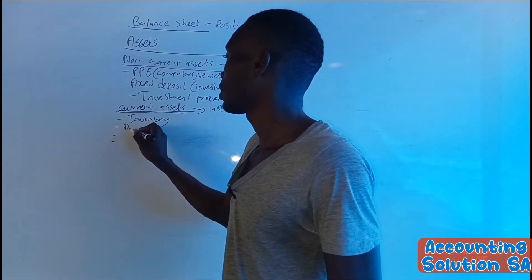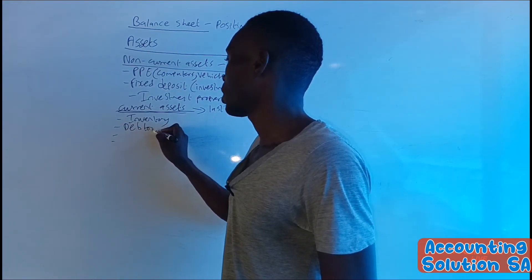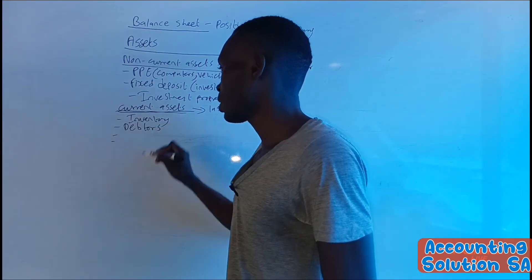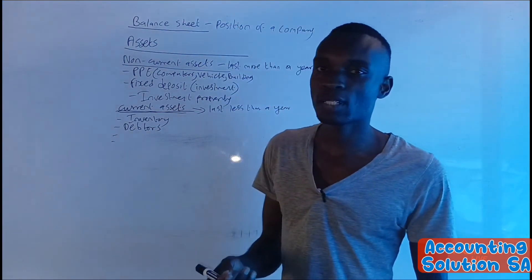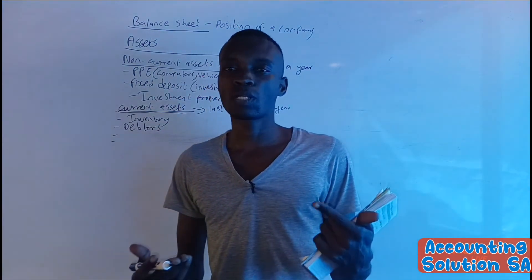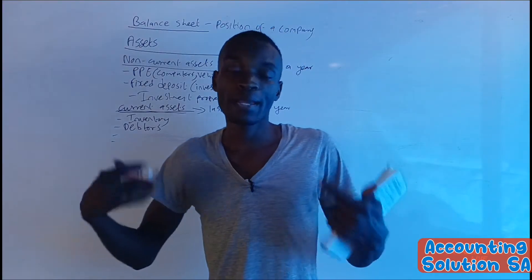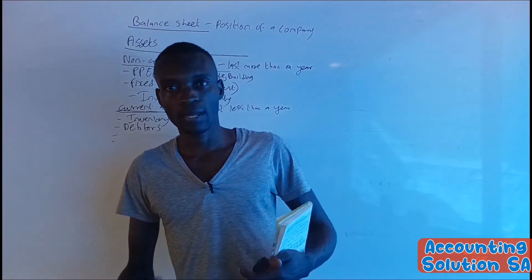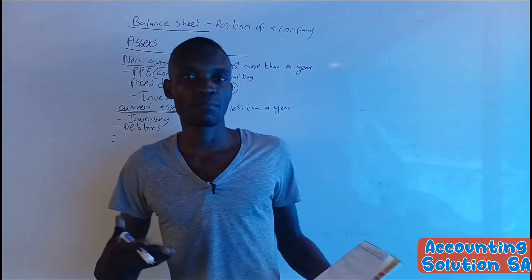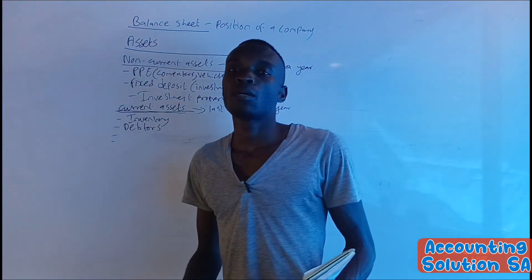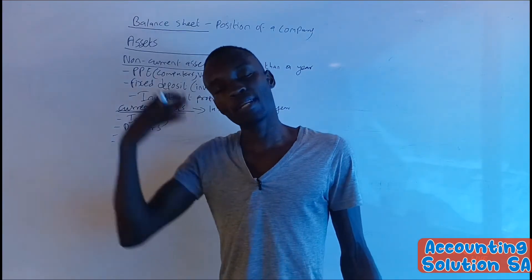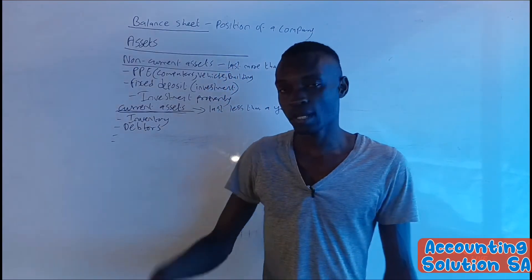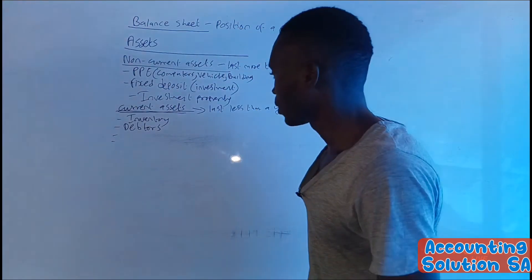We also have debtors or trade and other receivables. These are the people that purchase from us on credit, which means we are expecting them to pay us within 12 months. If someone comes today and borrows a bread, we can't say that the person will pay next year. No, the person is going to pay us normally within 30 days.